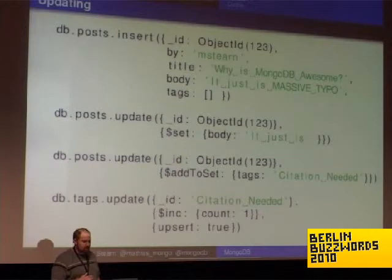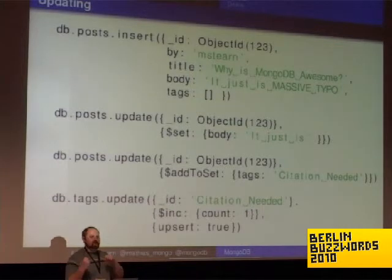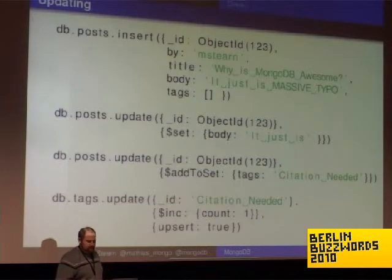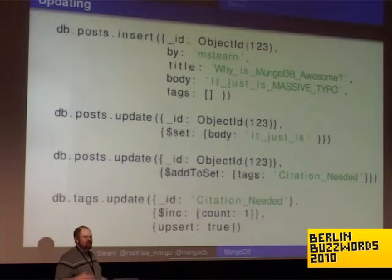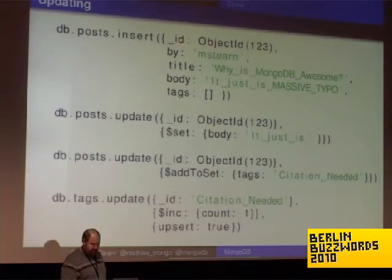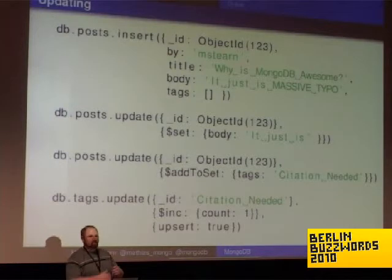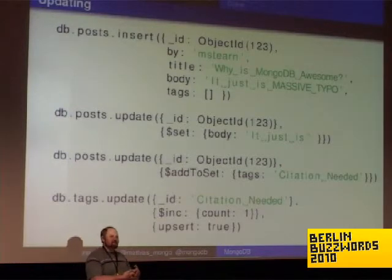The addToSet operator is useful when you have large arrays — you don't want to fetch the object, add to the array, then ship the whole object back. We have a limit of four megabytes per object right now, and we're thinking about expanding that to 32. If you have objects that large, you don't want to fetch and store them every time. Another advantage is that if you have multiple concurrent workers both adding tags, you don't have to worry about them conflicting between a fetch and a set — all the dollar operators guarantee atomicity.